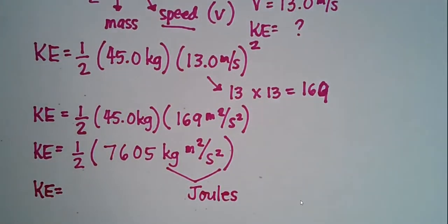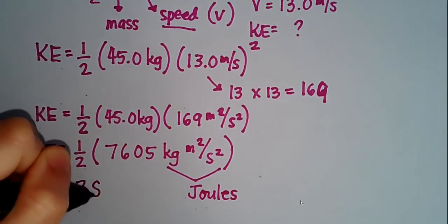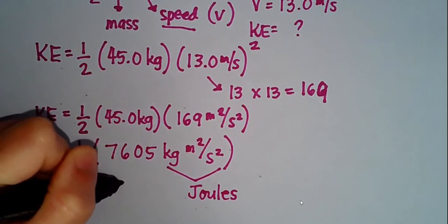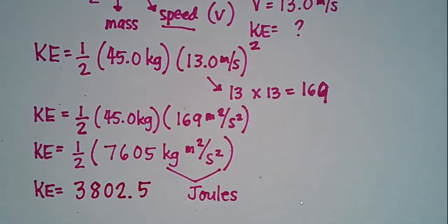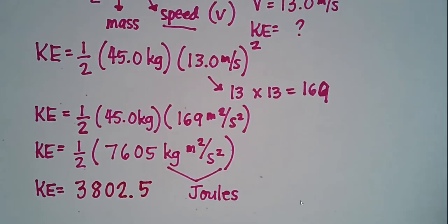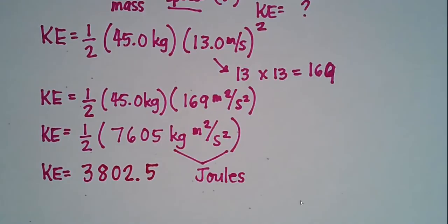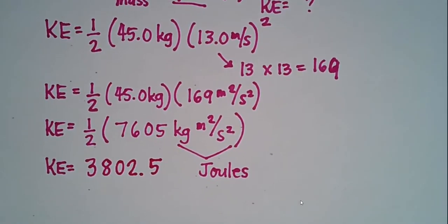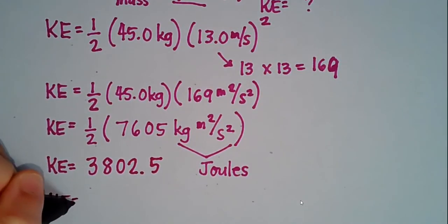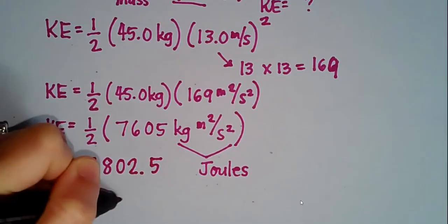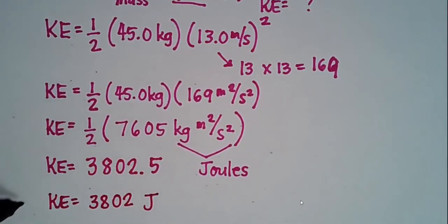So let's continue. 1/2 of 7,605 divided by 2 will give us 3,802.5 joules. So for the problem, what is the kinetic energy of a 45 kilogram object moving at 13 meters per second? The kinetic energy is equal to 3,802.5 joules.